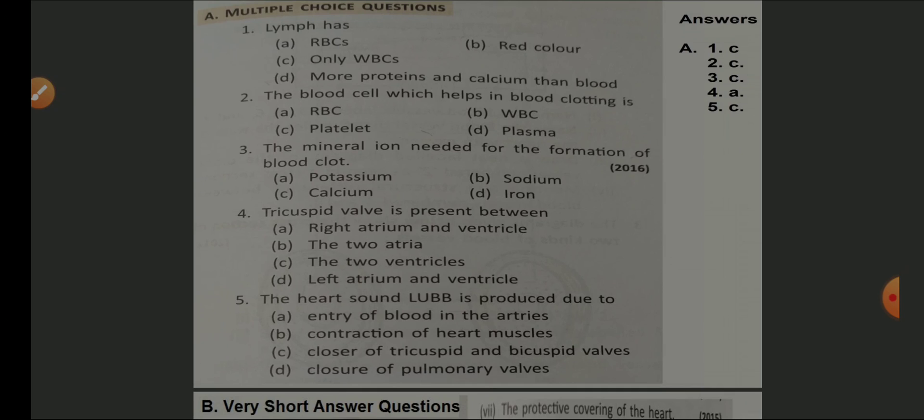The mineral needed for the formation of a blood clot — options are potassium, sodium, calcium, and iron. The answer is calcium, option C. Tricuspid valve is present between — options are right atrium and ventricle, the two atria, the two ventricles, left atrium and ventricle. The answer is between right auricle and ventricle, option A.